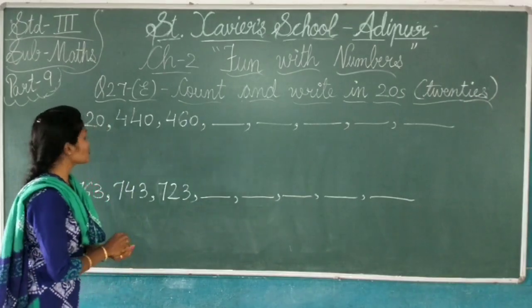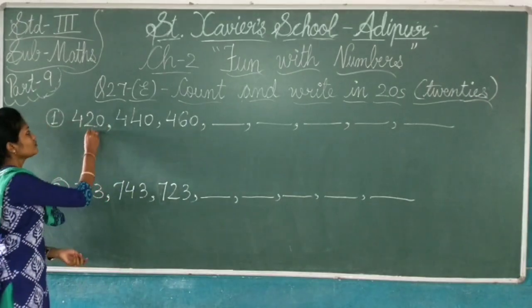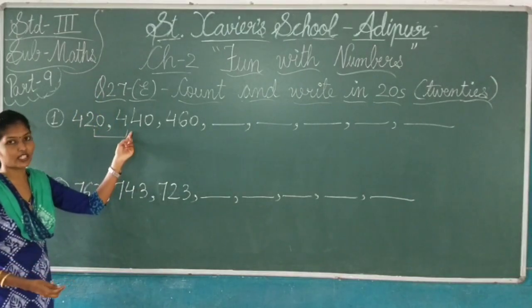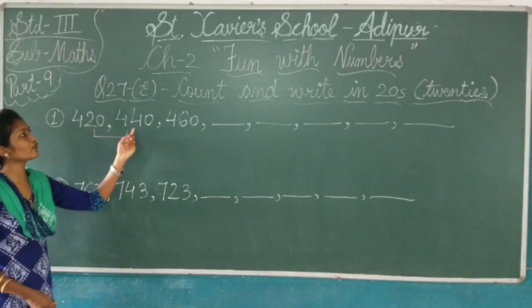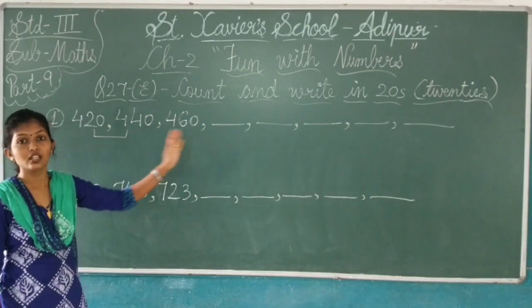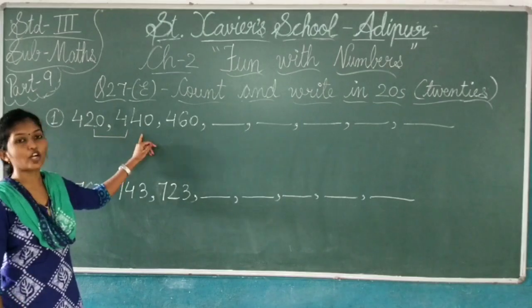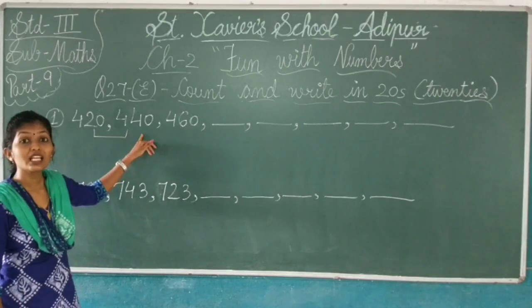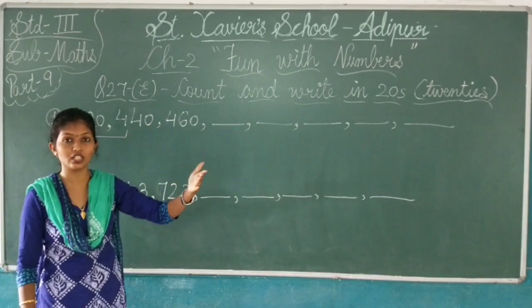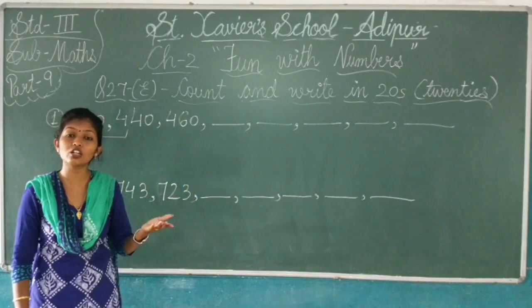So we will see the first two numbers. That is this one: 420 and 440. Now we have 420, 440, and 460. So this is in which order? The constant order we have. Twenties, forty. So this is in increasing order. This is in increasing order. And when this is in increasing order, what will we do?